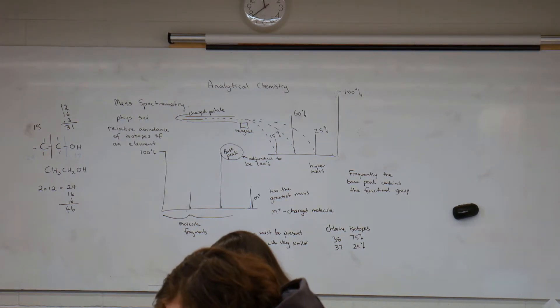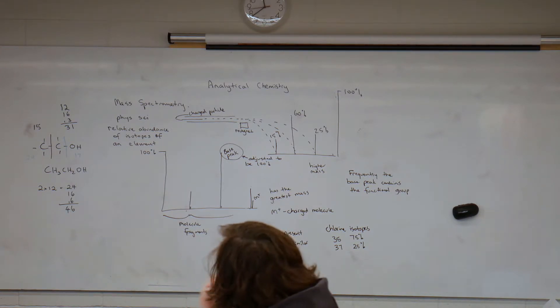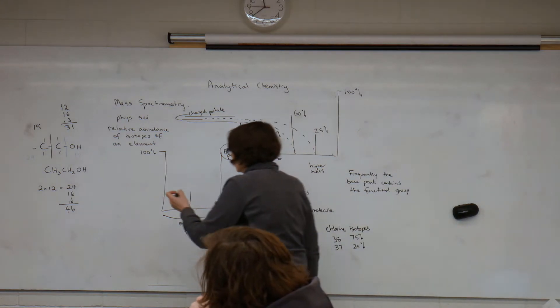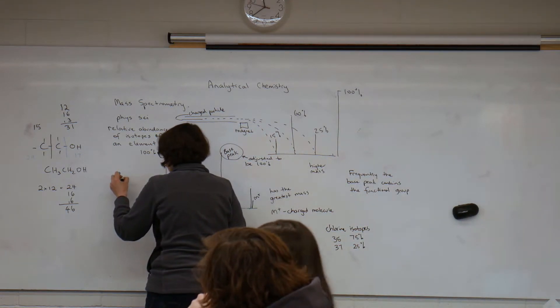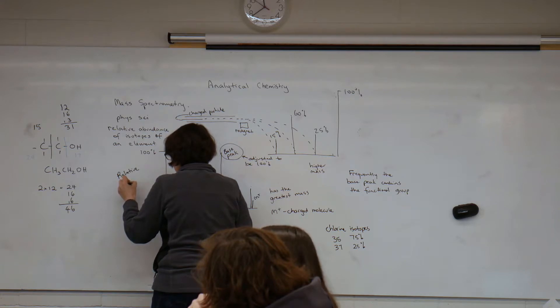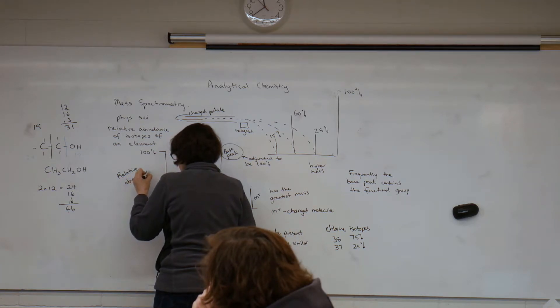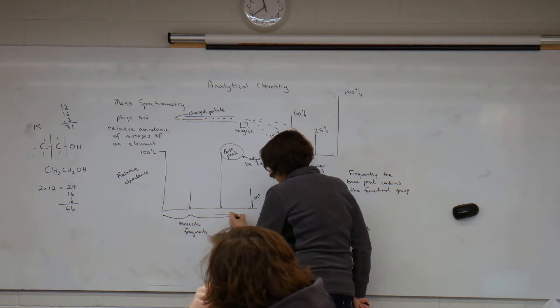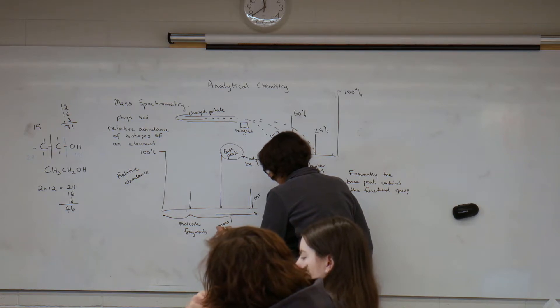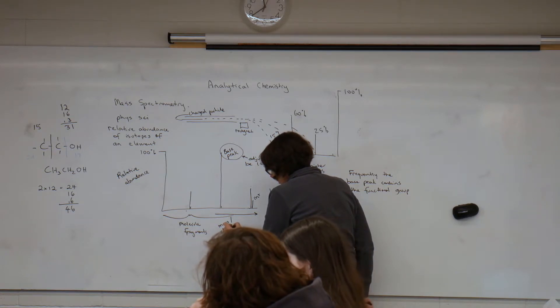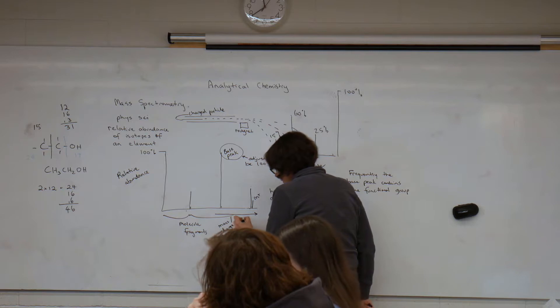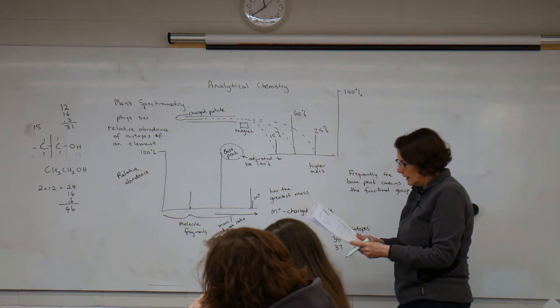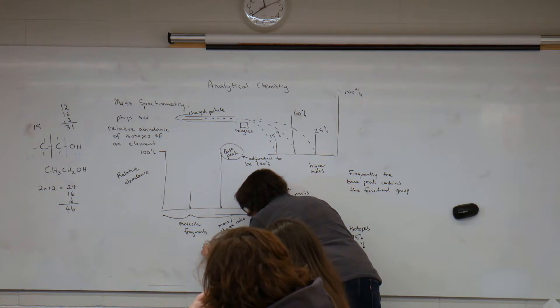So the y-axis is the relative abundance. That's pretty straightforward. With the x-axis, where we're increasing in this direction, is the mass to charge ratio.